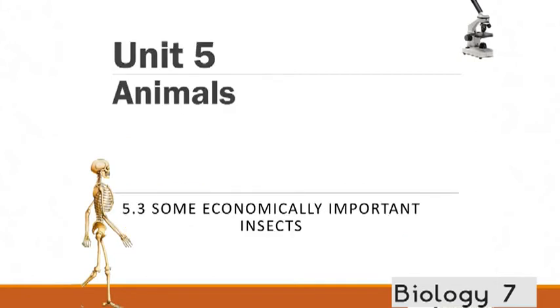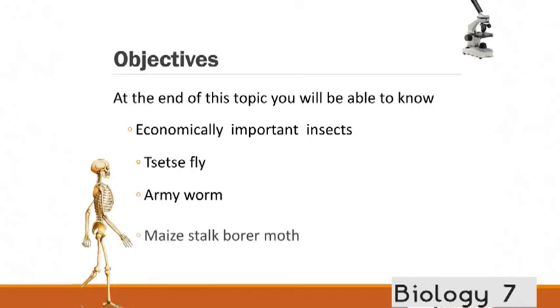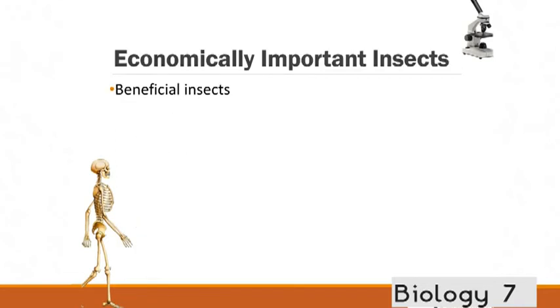These are the slides for unit 5.3. Where we are going to investigate some economically important insects. Why are insects important? By the end of this lesson you should be able to understand a little bit about why insects are important economically. So how they bring in money to the economy. And also why they are important for crops for example. We are going to learn a little bit about the tsetse fly. The army worm. And also the maize stalk borer moth. So let's just start jumping into how insects are important for the economy.